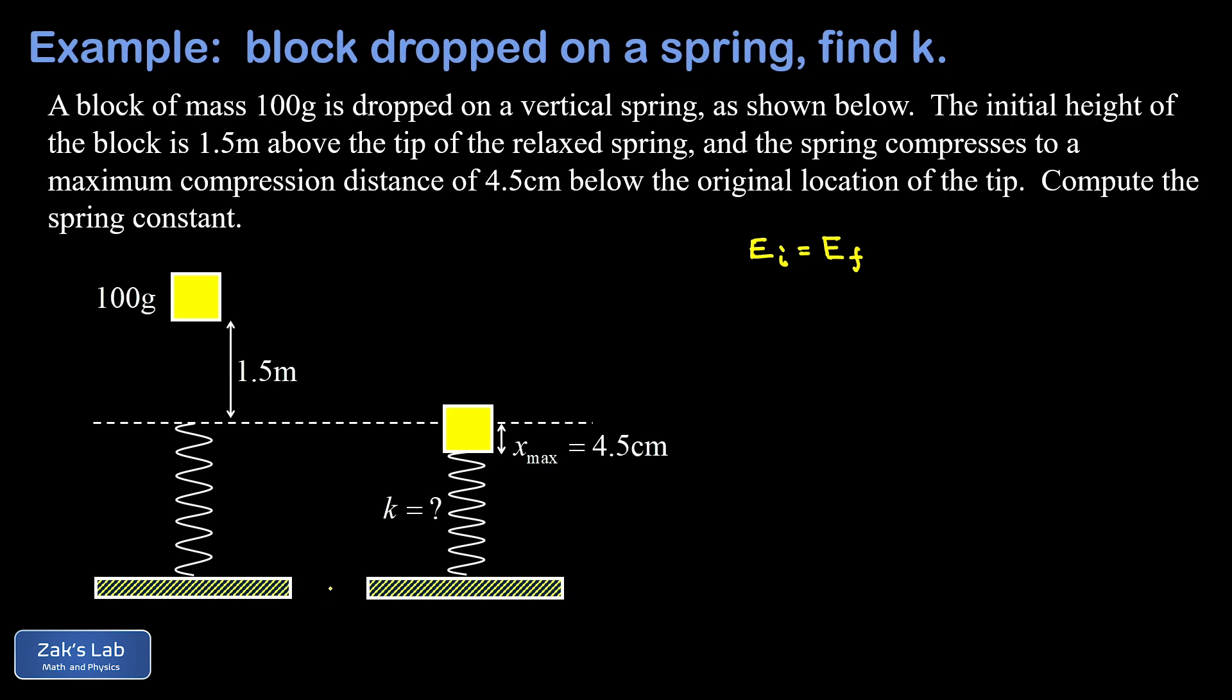It's important to be clear about where we're putting our origin for the purpose of computing gravitational potential energy. My personal preference is to just put the origin at the lowest point in the problem, and that makes it so we never have to deal with any minus signs. That's not the only way to do the problem. Because it's a relatively short video, I'm just going to do it both ways.